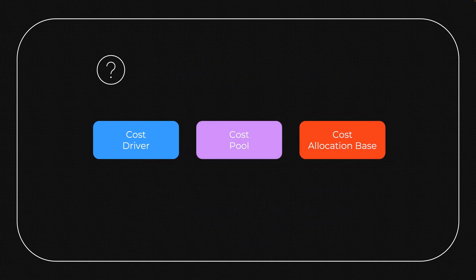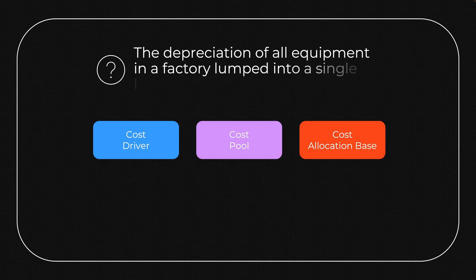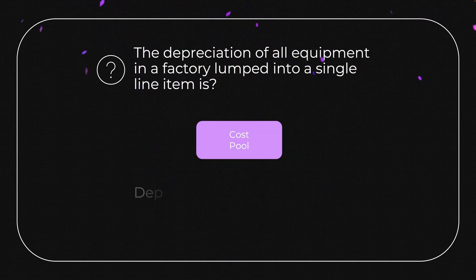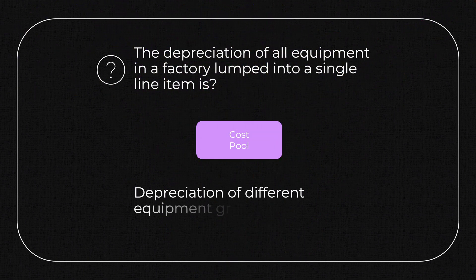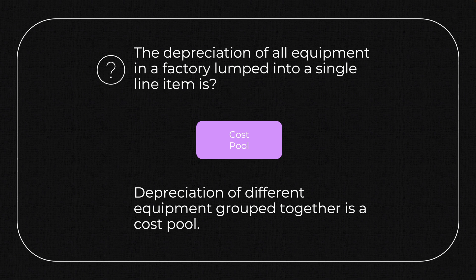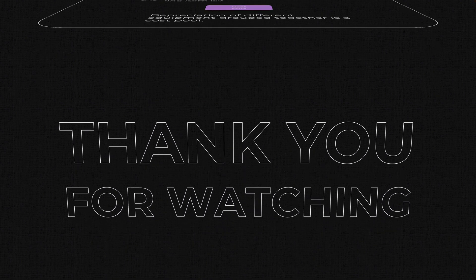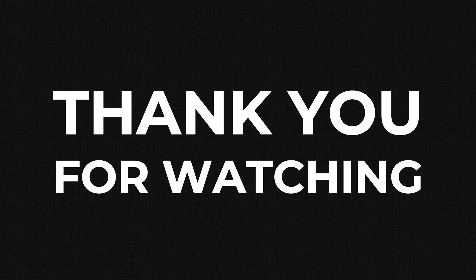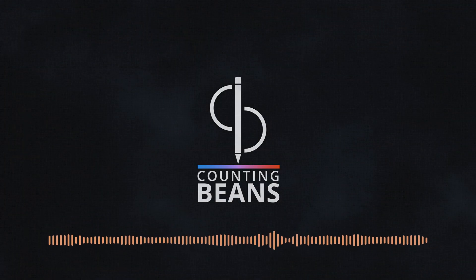Question two: the depreciation of all equipment in a factory lumped into a single line item is... If you said cost pool, you would be correct. Depreciation of different equipment grouped together is a cost pool, and the next step would be taking that cost pool and allocating it to various products. That's all for this video — I hope you found it helpful. Thank you for watching and may your journey be joyful.